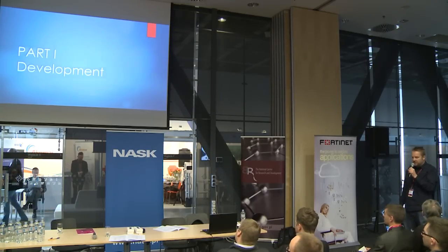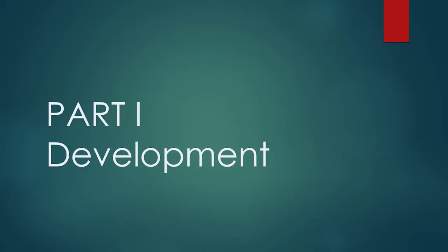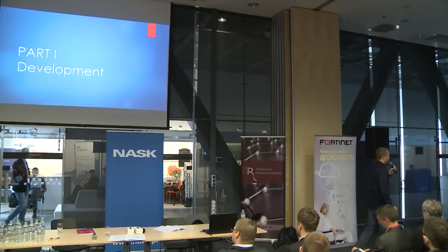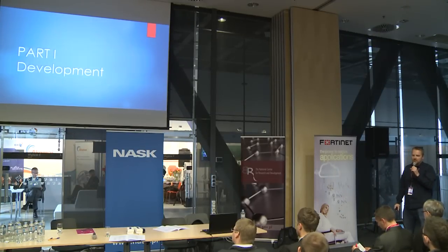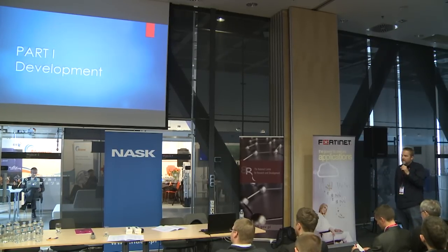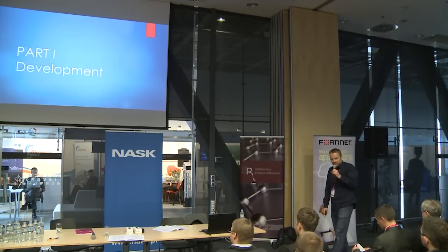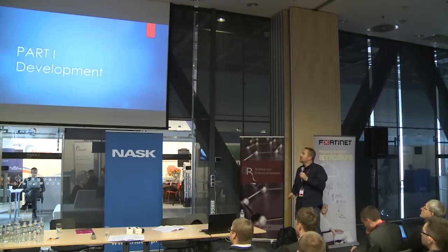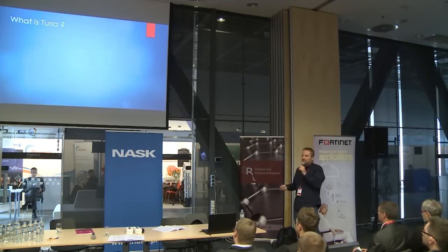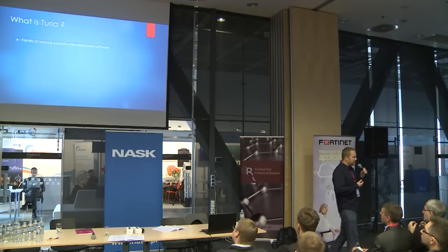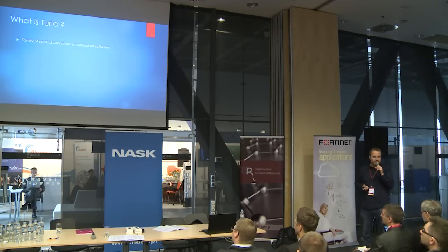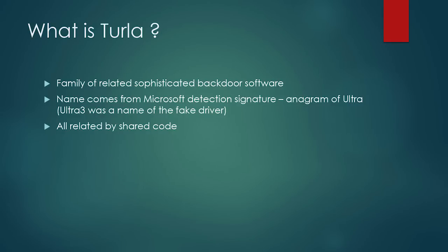Let me start about the first part: development. I split it into development and operations because I think it is just a tool that is developed and sold to some organizations that operate it, and as such it should be analyzed separately. So, what is Turla? For me, Turla is a family of related sophisticated backdoor software. The name comes from a Microsoft detection signature — an old one. It's an anagram of the word Ultra, because Ultra 3 was the name of a fake service that one of the Snake versions was using.